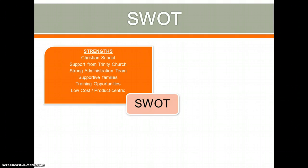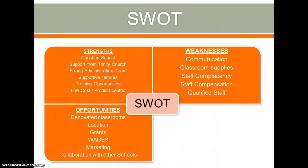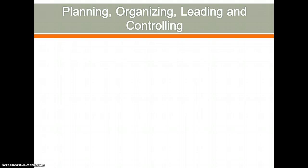We did a SWOT analysis together, and here is what we came up with. Our strengths: we're a Christian school, we get support from our church, we have a strong administrative team, supported families, great training opportunities, and we're a low-cost product-centric school. Our weaknesses: communication, need for better classroom supplies, staff complacency, and need to raise staff compensation. Our opportunities include renovated classrooms, great location, grants, and the wages program. Our threats include low enrollment at one school, competition charging less, difficult community demographics, lack of qualified staff, and potential impact of the Affordable Care Act.